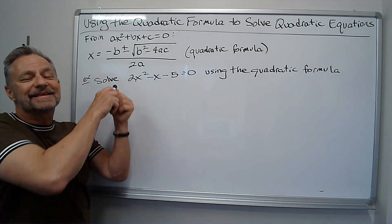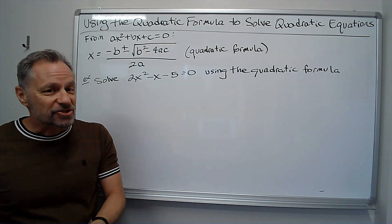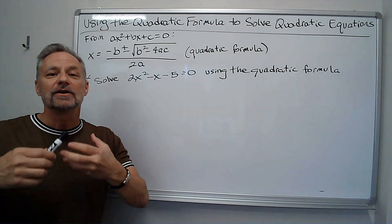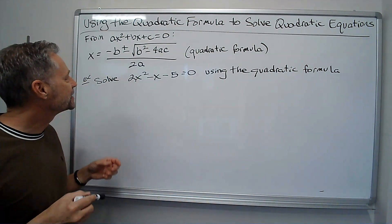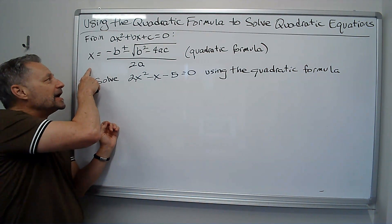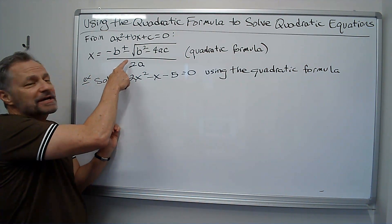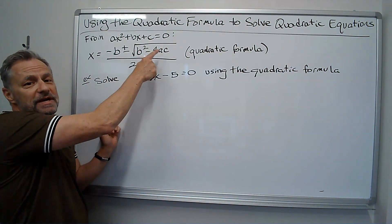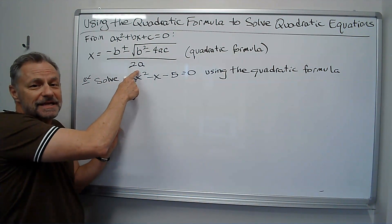But I learned this as a song to the song Pop Goes the Weasel. So it goes something like this. So here's how I remember it: x equals negative b plus or minus the square root b squared minus 4ac all over 2a.